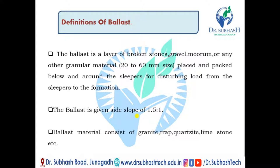Ballast is a layer of broken stones, gravel, murum, or any other granular material of 20–60 mm size, placed and packed below and around the sleepers, distributing the load from the sleepers to the formation. The ballast is given a side slope of 1.5 to 1.